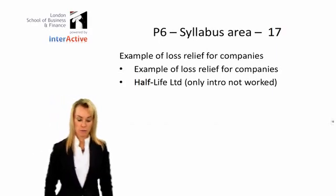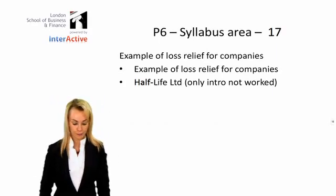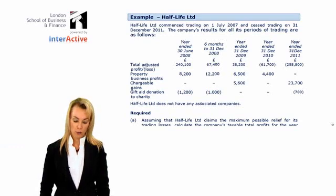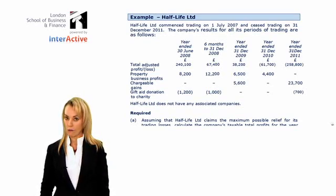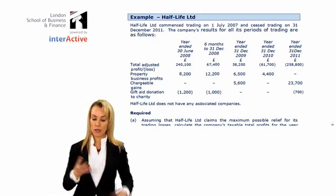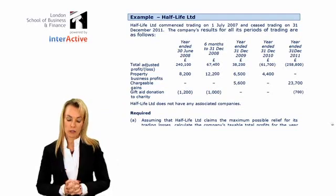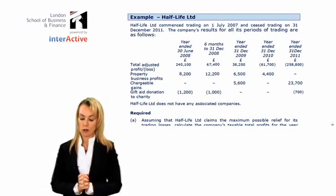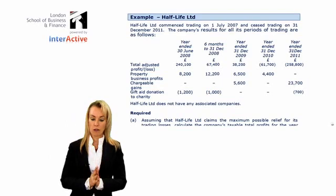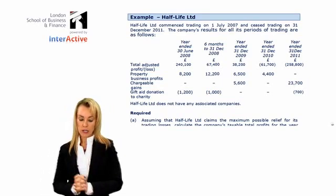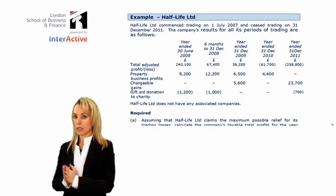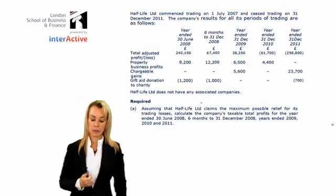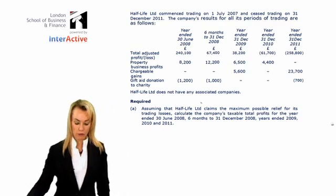Tape number 17, still looking at corporation tax. In this session we're going to look at another example for you to work through on your own. This example in your class notes is called Half Life Limited. It's designed to demonstrate what we've talked about regarding losses. In this question you'll notice it has two trading losses — the company starts trading and ceases trading, with results from the first CAP to the final one. In Part A, assuming Half Life claims the maximum possible relief for its losses, you calculate the taxable total profits for the various CAPs.